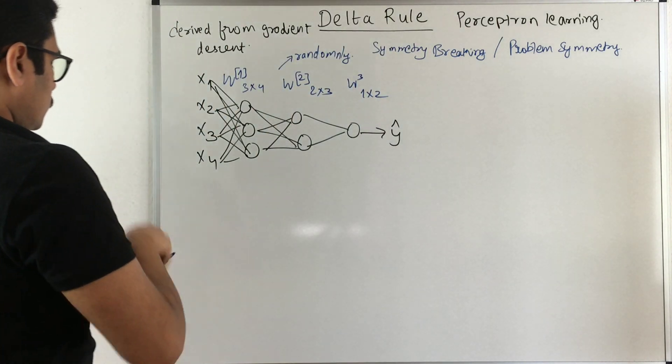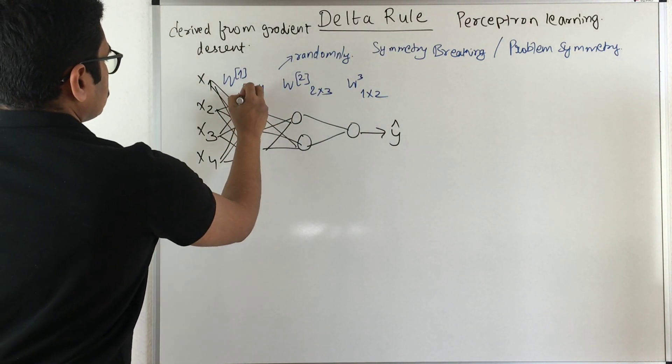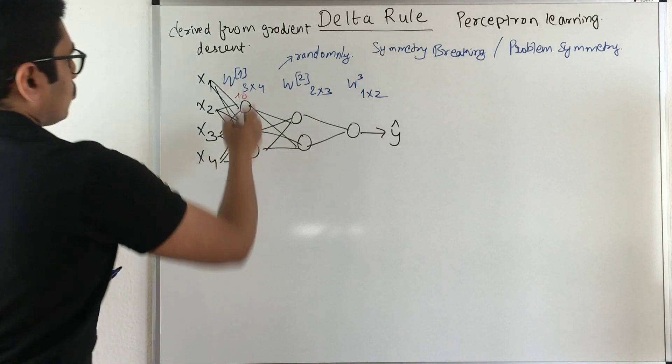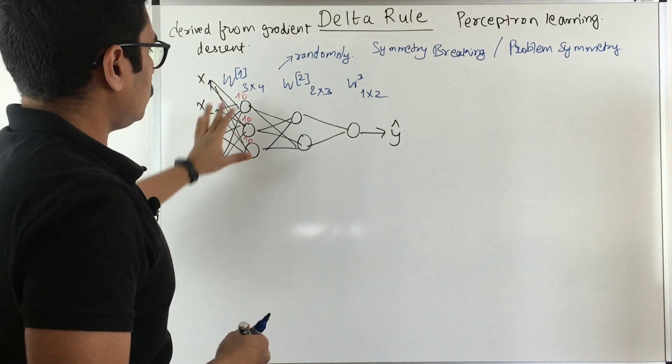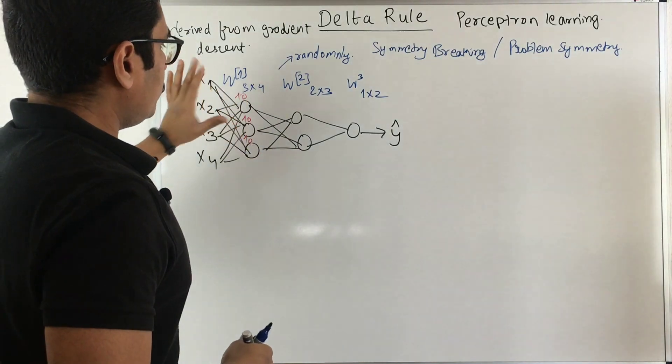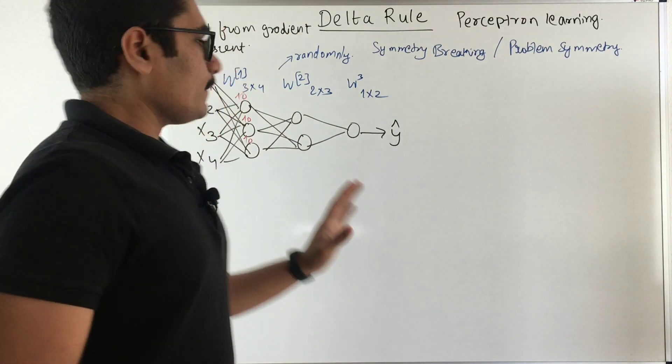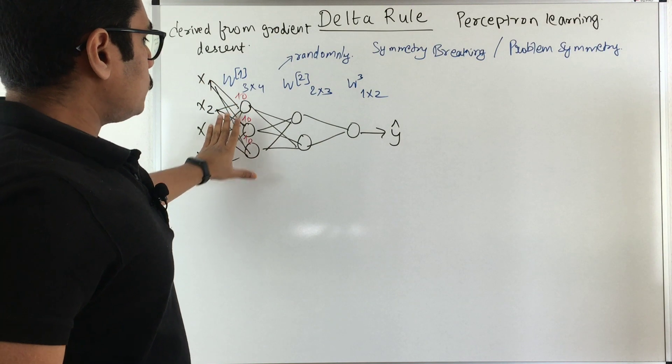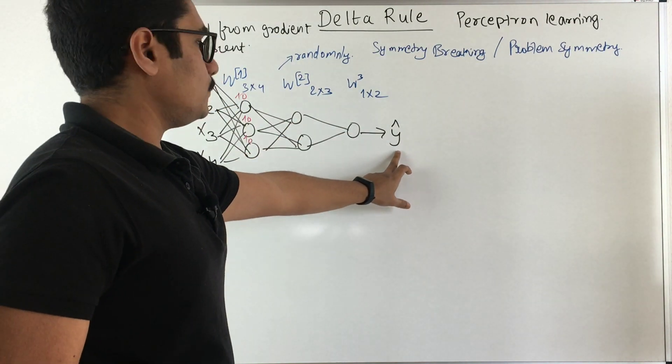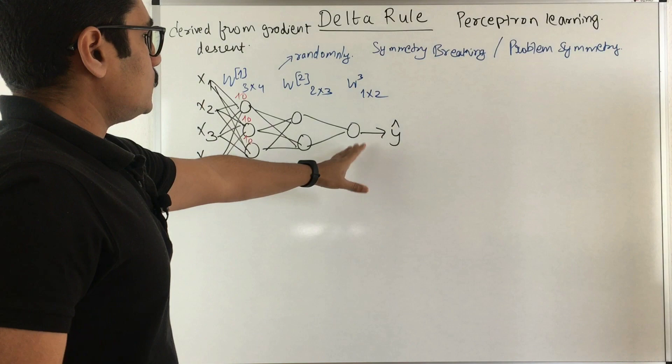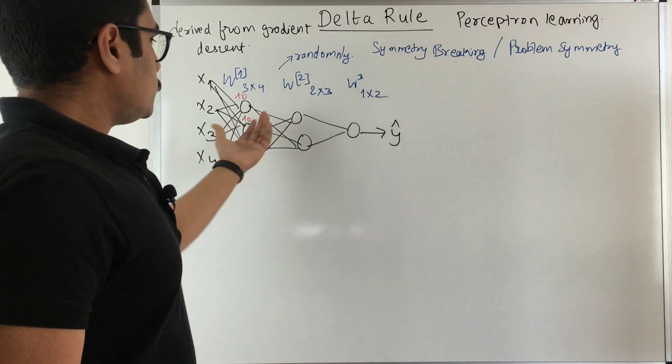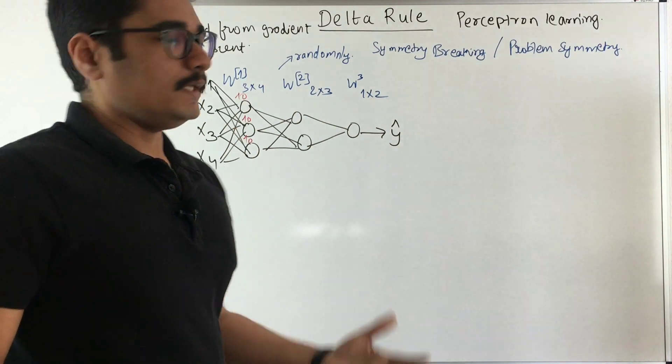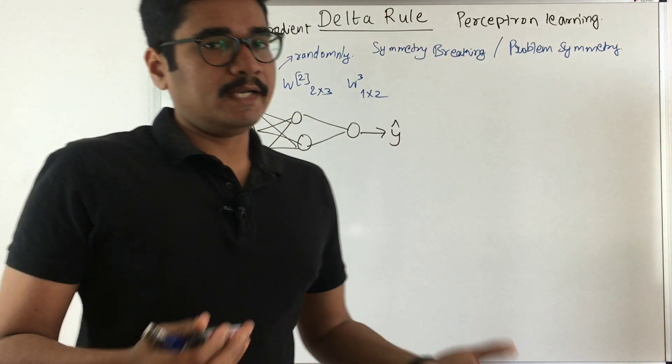Say for example, we are initially assigning these weights as say 10, 10, 10 for all these weights. That is for 12 weights across these connections in the first layer we are keeping it as 10, means we are keeping one single value. Now this particular weights will update depending upon the error value that you get at the final output. So essentially when you just backpropagate across the different layers, each of them have to be updated equally because they have all identical weights.